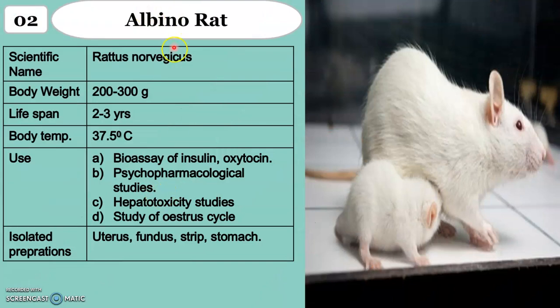Number 2 is the albino rat. Scientific name is Rattus norvegicus. Body weight: 200 to 300 grams. Lifespan: 2 to 3 years. Body temperature: 37.5 degrees Celsius. Uses and isolated preparations include bioassay of insulin, oxytocin, and hypotensive agents. You can isolate the uterus, fundus strip, and stomach from this rat. Pause and write this in your notebook. In viva, the examiner or your teachers may ask: What is the lifespan of albino rat? What is the use of rat? Which part is isolated from the rat?